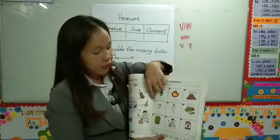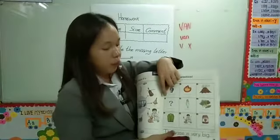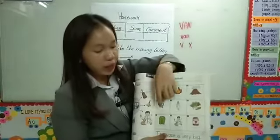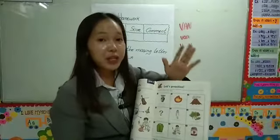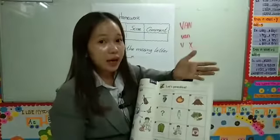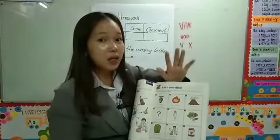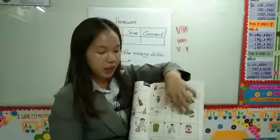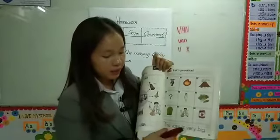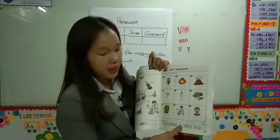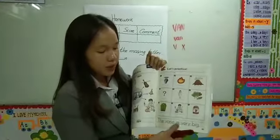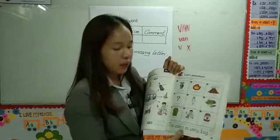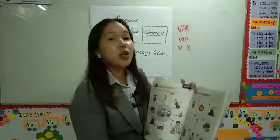And picture number four — okay everyone, teacher will explain it and tell you. Please try yourself. If the beginning sound is like 'van,' write V; if it's not the beginning sound like 'van,' it's a different sound, you can cross it. Okay, so please read this sentence with teacher: 'The vase is very big.' The vase is very big. Okay please practice yourself.